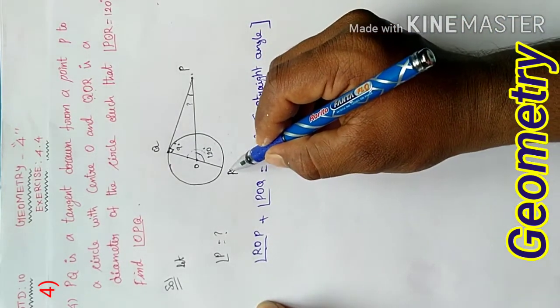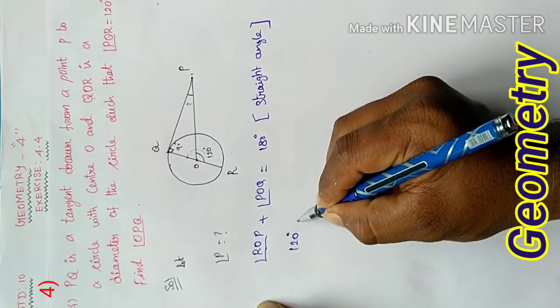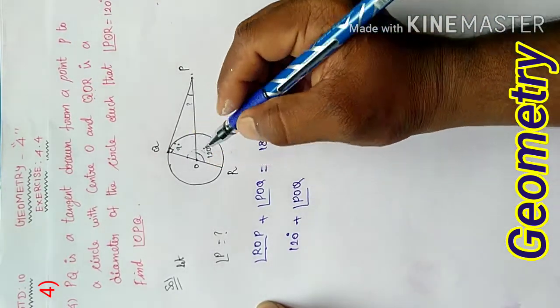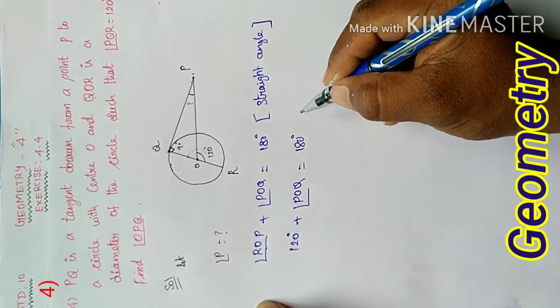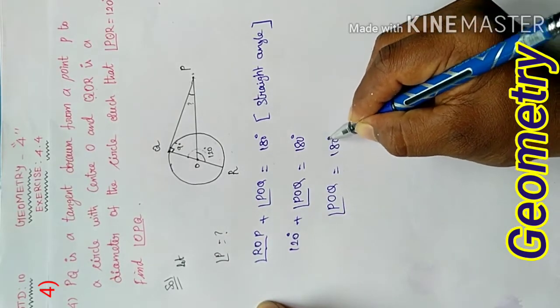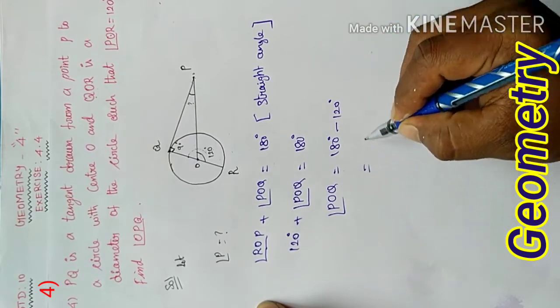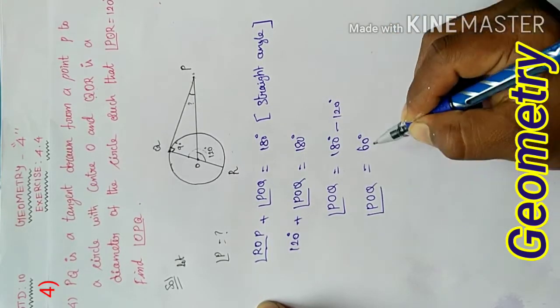We find angle POQ. 120 plus angle POQ equals 180. Therefore, angle POQ equals 180 minus 120, which equals 60 degrees. Therefore, angle POQ equals 60 degrees.